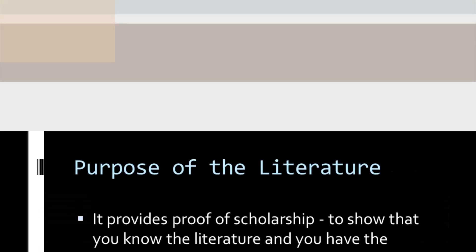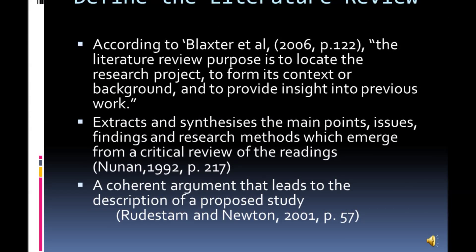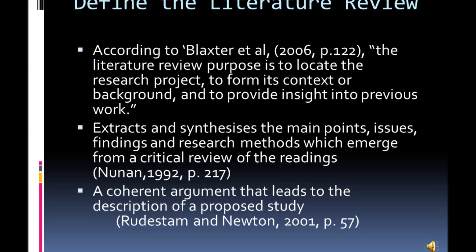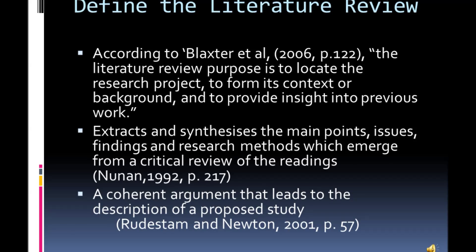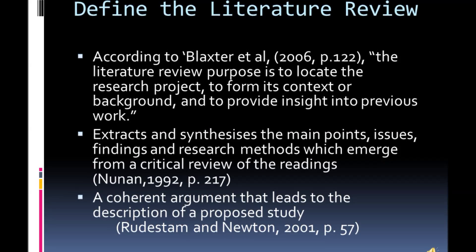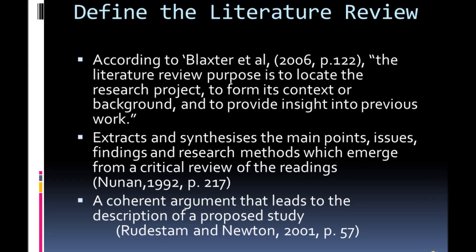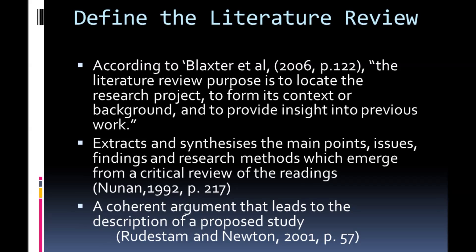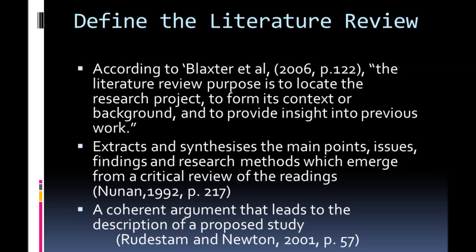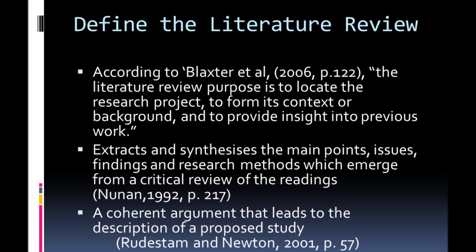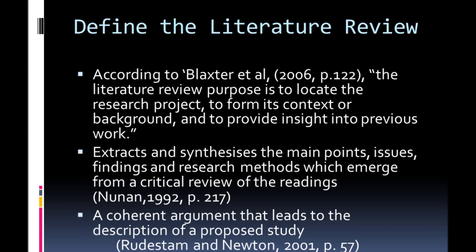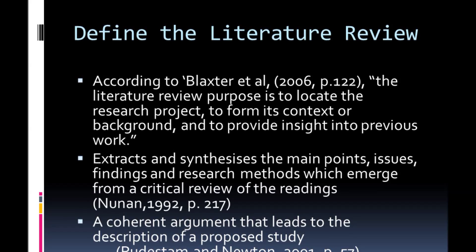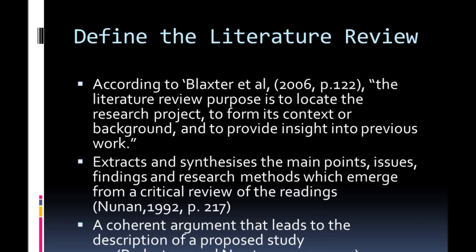Defining literature review. Here are some of the definitions. The literature review purpose is to locate the research project, form its context or background, and to provide insight into previous work. It extracts and synthesizes the main points, issues, findings, and research methods which emerge from a critical review of the readings — forming a coherent argument that leads to the description of a proposed study. The comprehension of various definitions indicates that key issues, insights, gaps, and key points from previous researchers can be useful in order to develop a coherent argument.